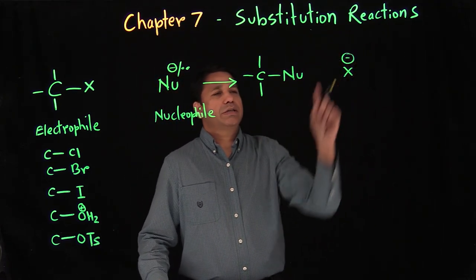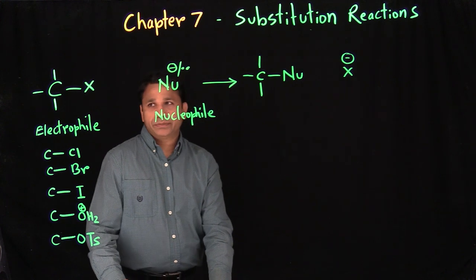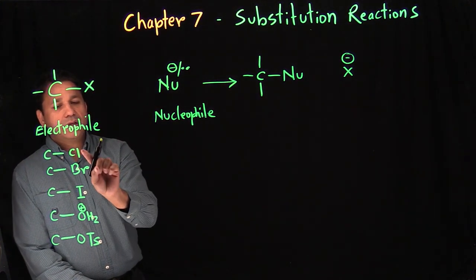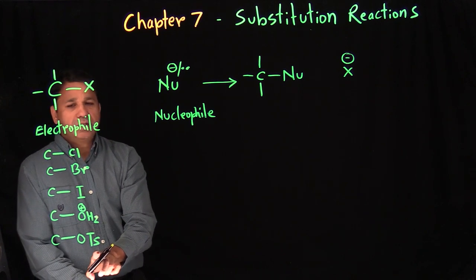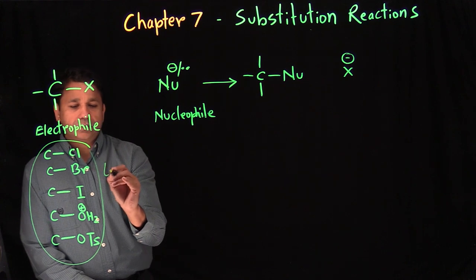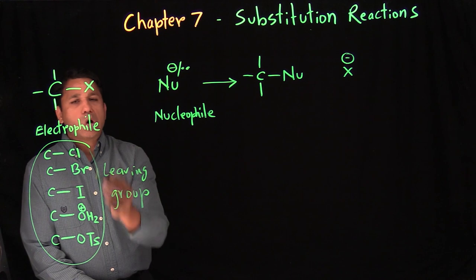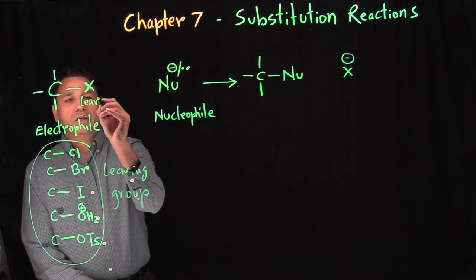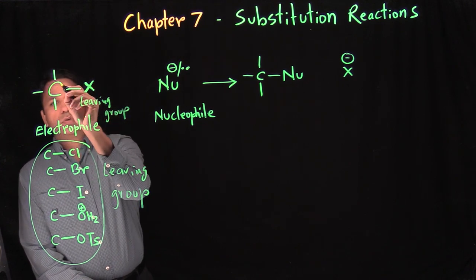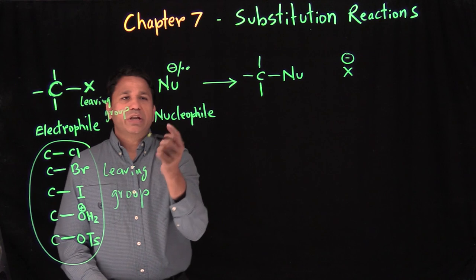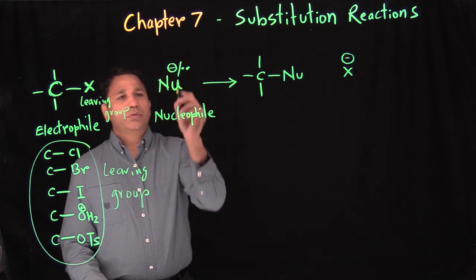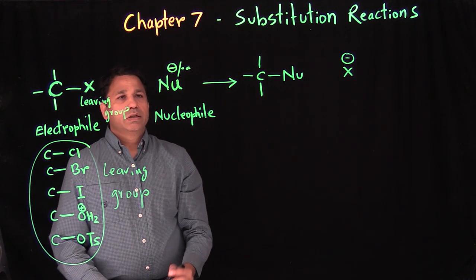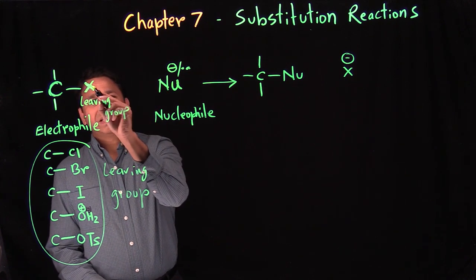This section covers substitution reactions. In a basic substitution reaction, you have a carbon with a leaving group. X can be chlorine, bromine, iodine, OH2+, or OTs — these are all called leaving groups. You also need a nucleophile, which is anything with a negative charge or an electron pair. In this reaction, the nucleophile will replace the leaving group.